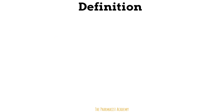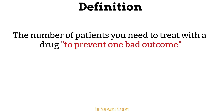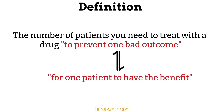By definition, the number needed to treat is the number of patients you need to treat to prevent one additional bad outcome, such as death, stroke, etc. We can rephrase this definition as well: the number needed to treat is the number of patients you need to treat in order for one additional patient to have the benefit of the drug.